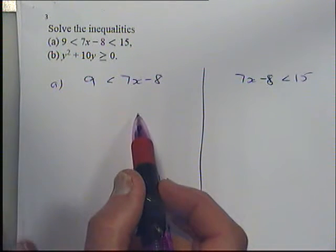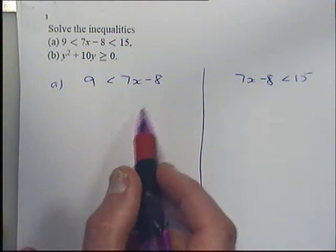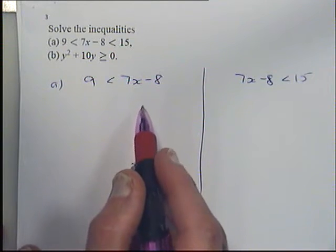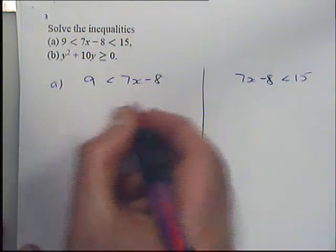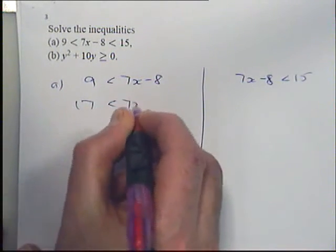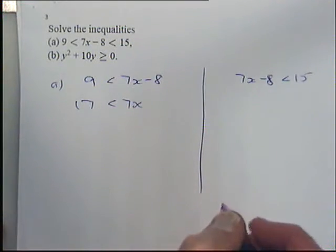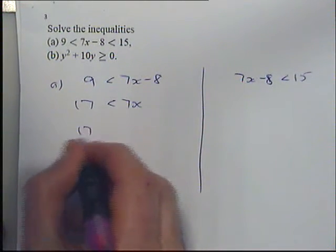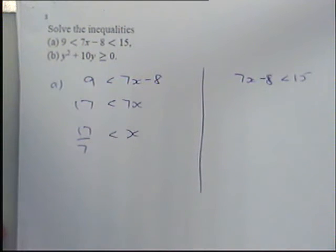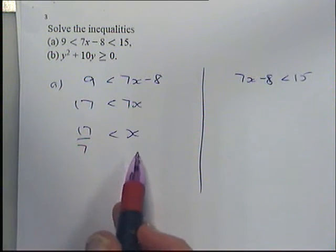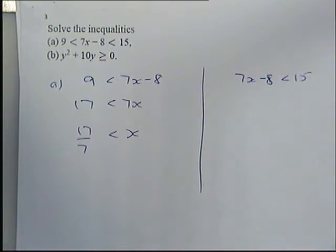So let's work on the left-hand side first of all. First step, somebody, not the front row. They're not allowed to answer. Plus 8 to both sides. Next step, divide by 7. OK, so I've isolated my x over here.